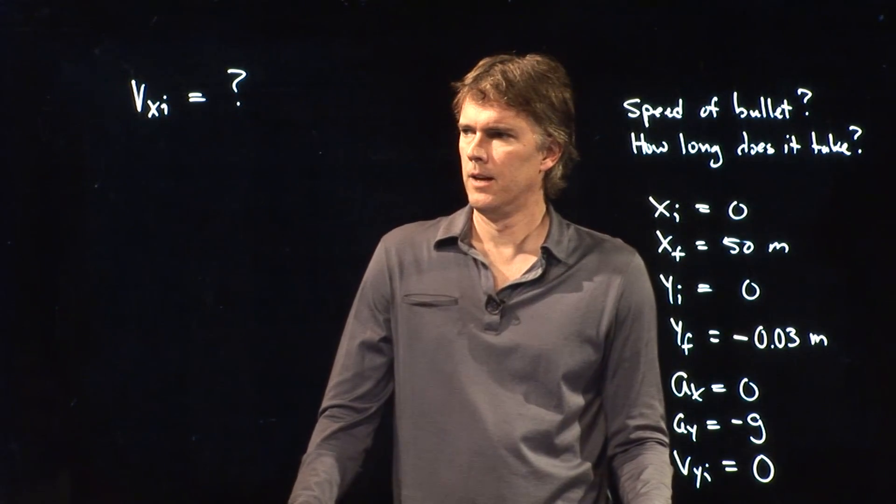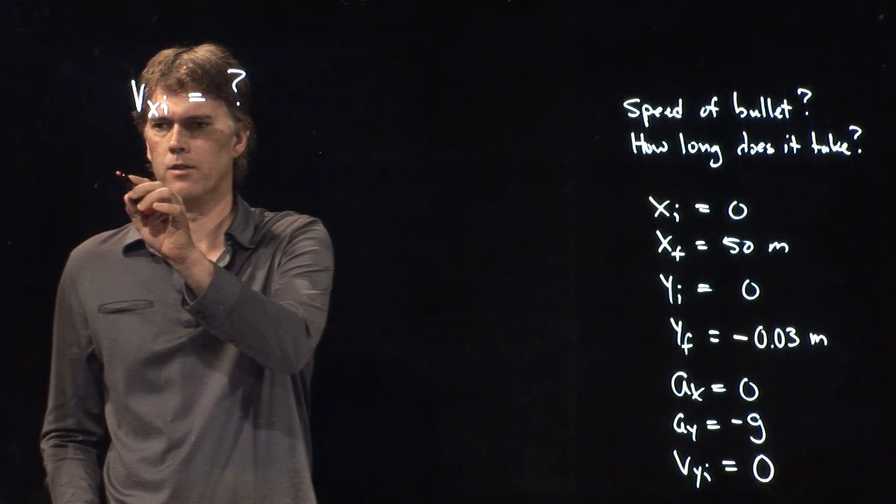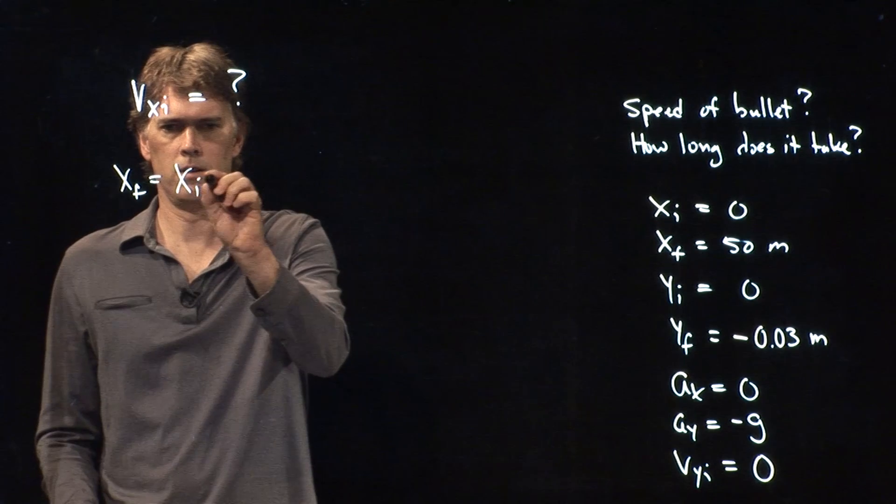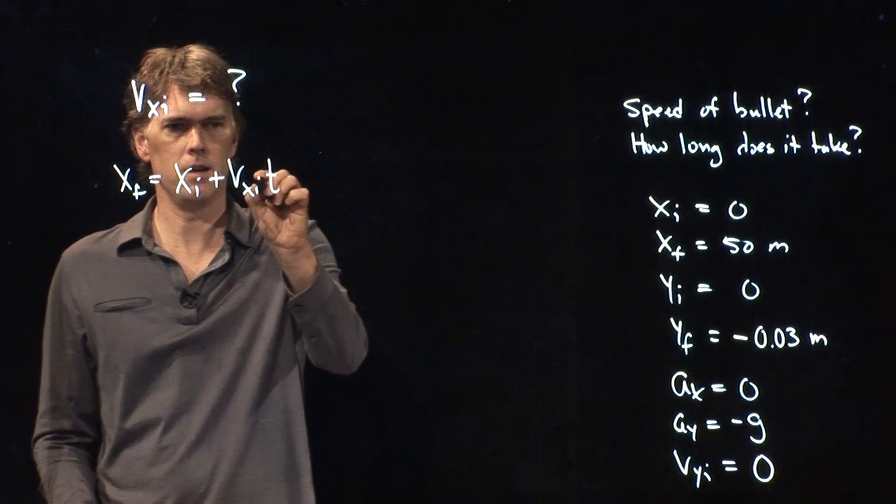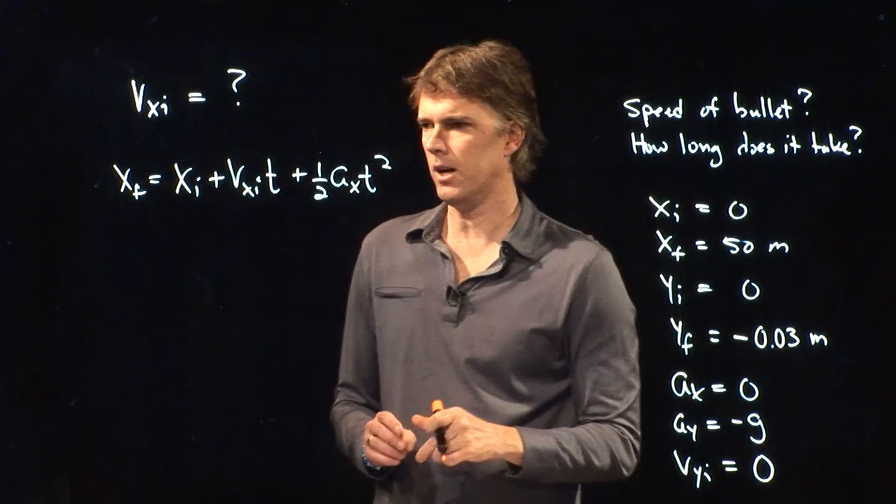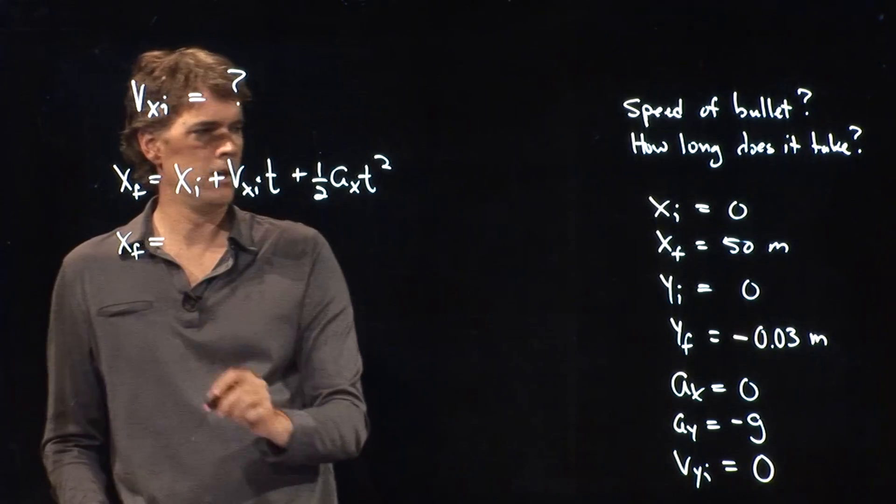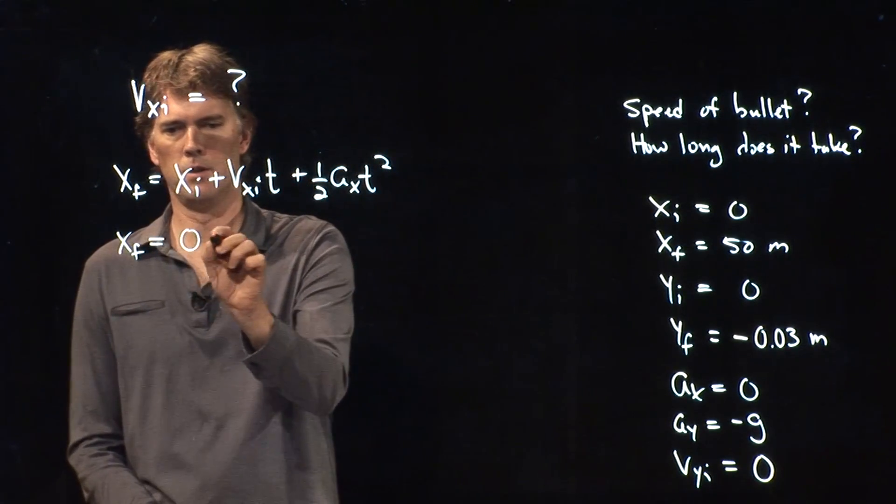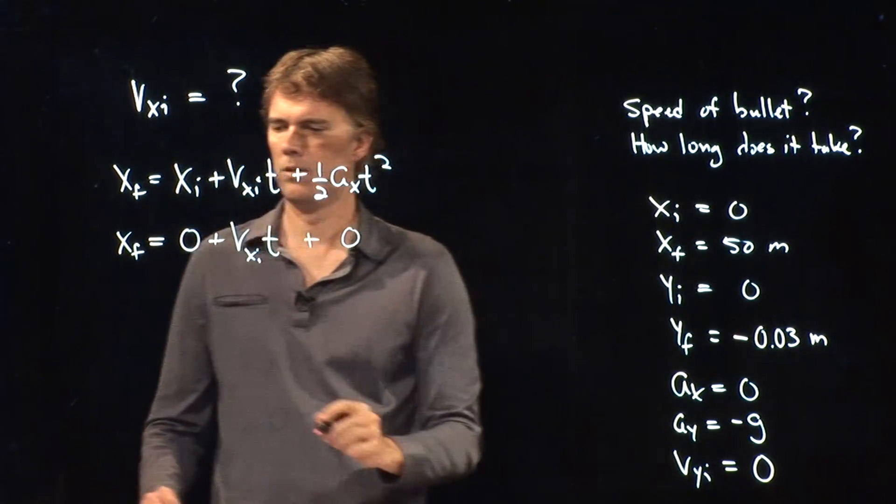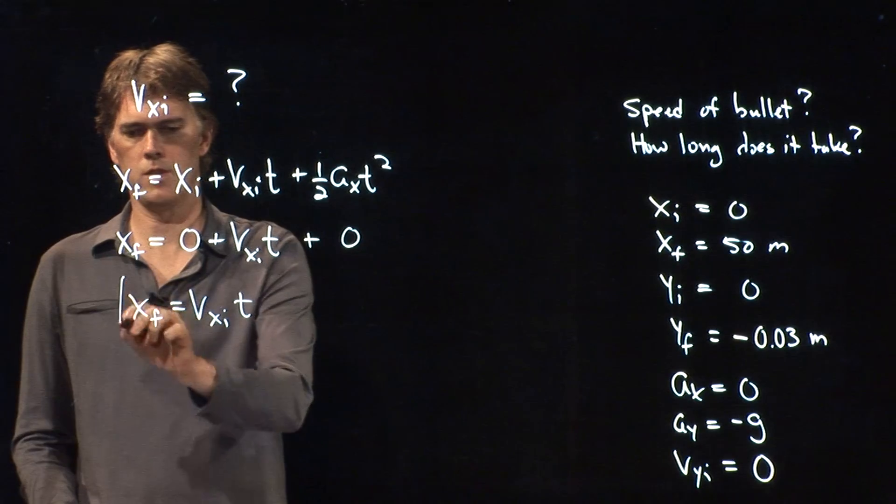We might be able to do that because let's go to our kinematic equations. One of the kinematic equations we have is the following: x final equals x initial plus vx initial times t plus 1 half ax t squared. All right. That looks pretty good. Let's plug in what we know. We know x final. We know x initial is zero. Vx initial is what we're looking for. We know that ax is zero. And so we get a nice little equation here.